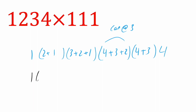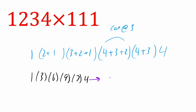So we have: one, two plus one is three, three plus two is five, five plus one is six, four plus three is seven, seven plus two is nine, then four plus three is seven, and then we have four. Now each of these numbers are single digits, so we have our answer: 1, 3, 6, 9, 7, 4. And this right here is our final answer.